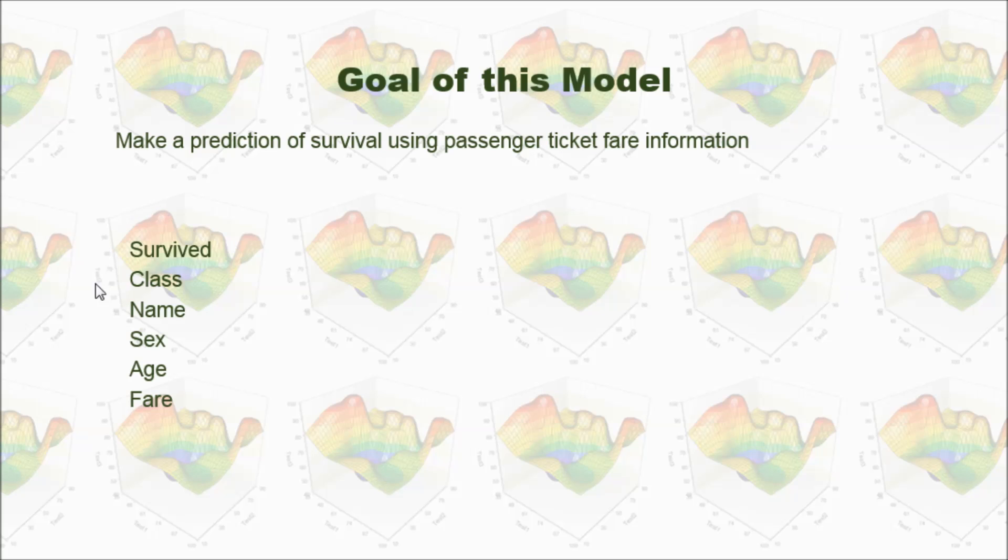In our data, we have this kind of data: survived, if it's one, that means survived. If it's zero, means the passenger died. And the class means which class this passenger was in, and the name of the passenger, the sex of the passenger and age. And the most important thing, we need this fare information about the ticket of the passenger.